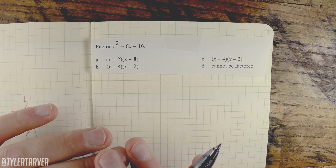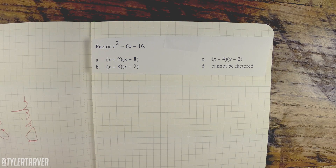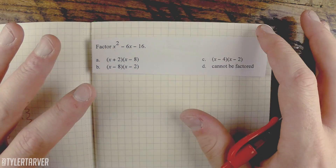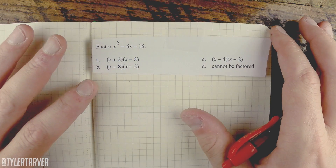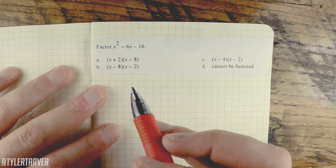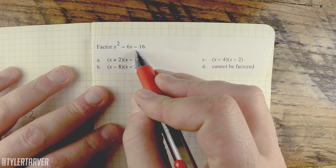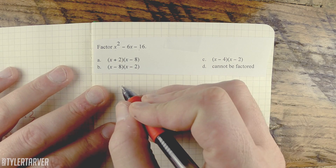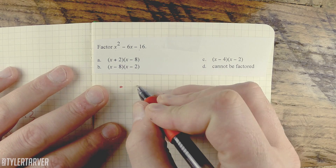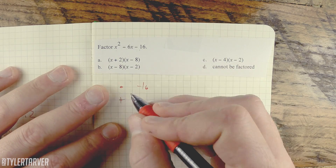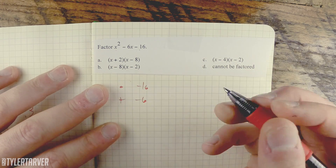Okay, welcome back. I'm gonna give you the cheat code on this. This is like a shortcut cheat code. The way to do this is you've got to figure out what two numbers multiply to equal negative 16 and add up to equal negative 6.